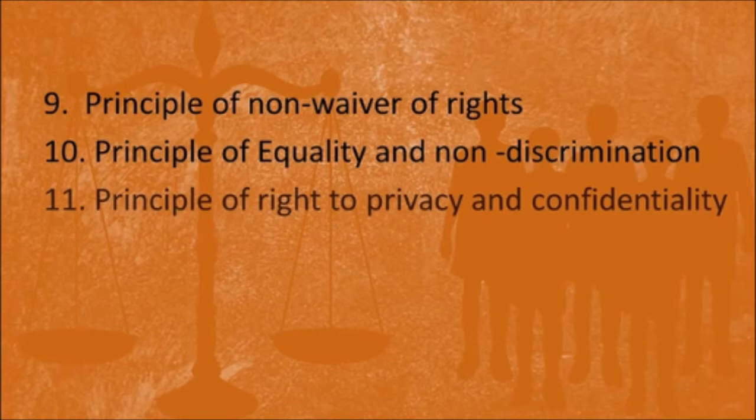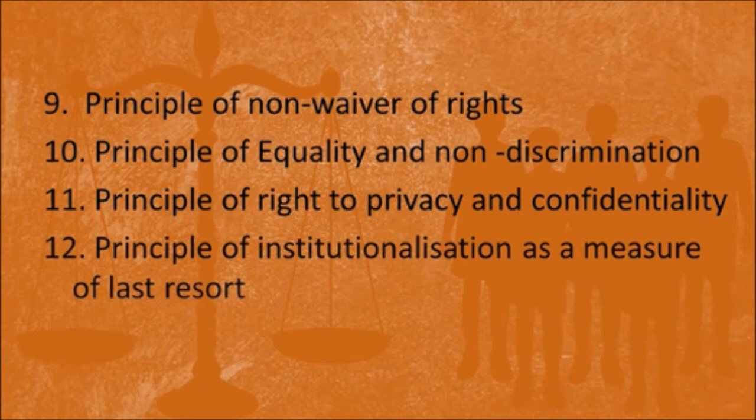The next principle is the principle of institutionalization as a measure of last resort. If the Juvenile Justice Board finds any child in conflict with law, the child is placed in institutional care only as a last resort after making a reasonable inquiry. Instead, the act provides for alternatives such as admonition, community service, counseling, probation and so on.